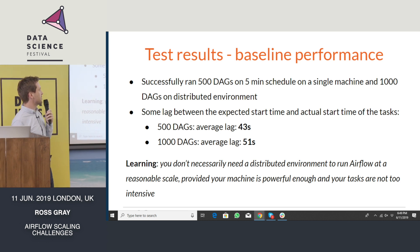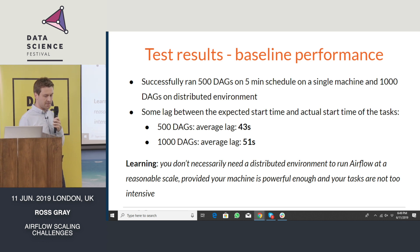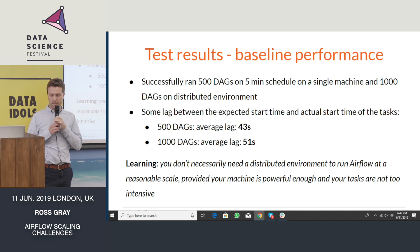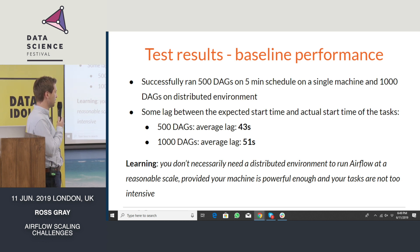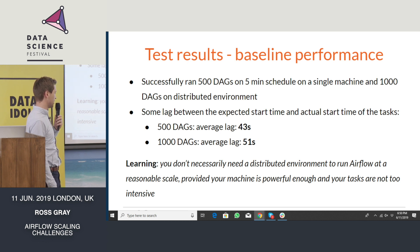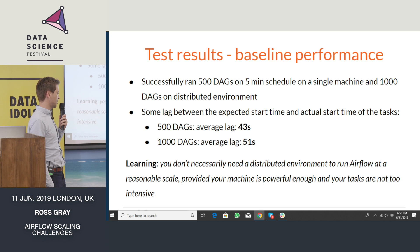So what did we find after running all these tests? For the baseline Airflow performance tests, we were able to successfully run 500 DAGs on a five-minute schedule on a single machine. In order to go higher than that, we realised we needed a distributed environment, and using that distributed environment we managed to scale up to 1,000 DAGs. In all of these tests, we found some lag between the expected start time of each task and the actual start time, and this lag increased as the number of DAGs increased. The key learning was that depending on your workload, if you're not running particularly intensive tasks, you don't necessarily need a distributed environment — you could probably get away with just running it on a single machine, provided that machine is powerful enough.